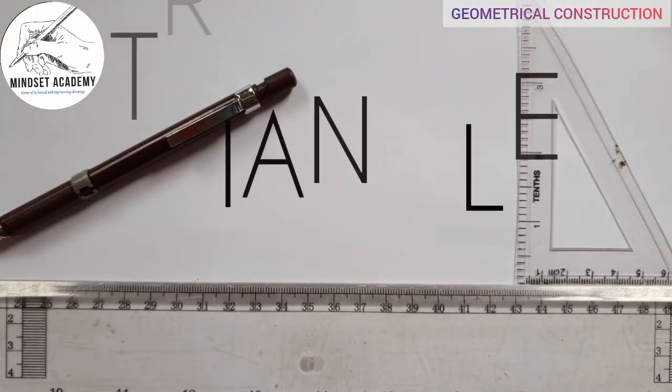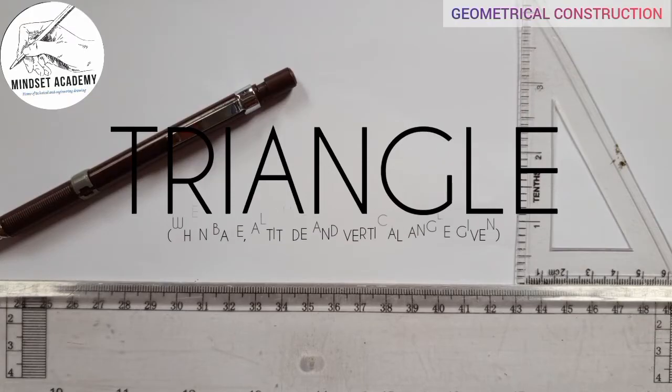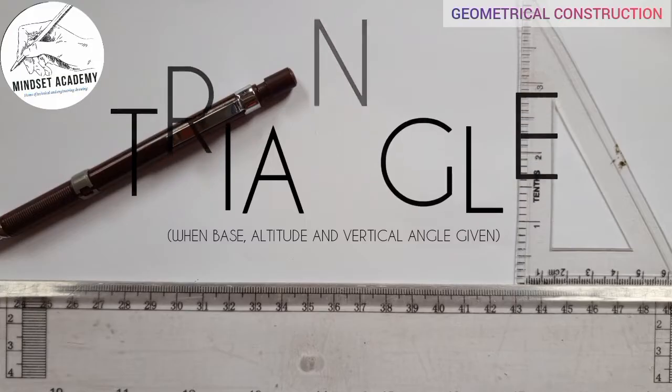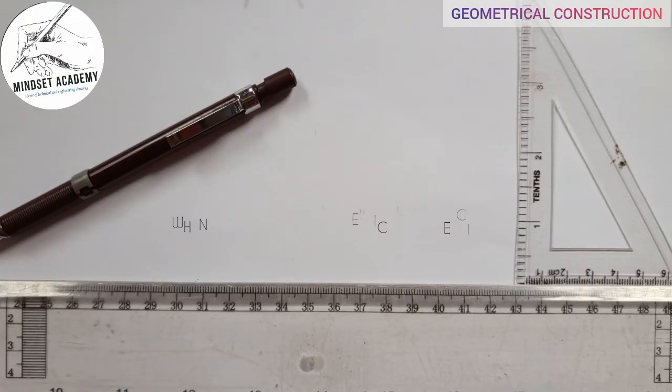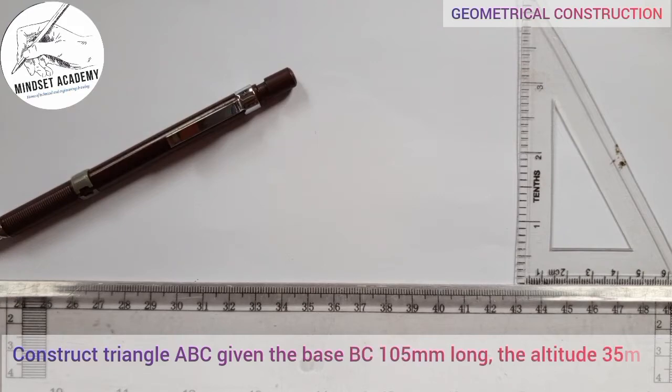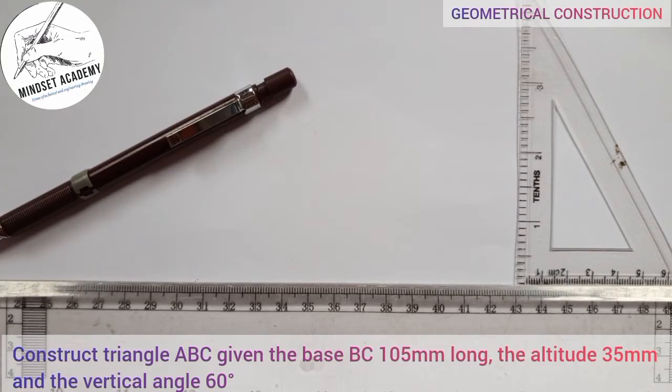Welcome to my channel Mindset Academy, where we want to solve a problem involving triangle. The question goes like this: construct triangle ABC, given the base BC 105 millimeter long, the altitude 35 millimeter, and vertical angle 60 degree.